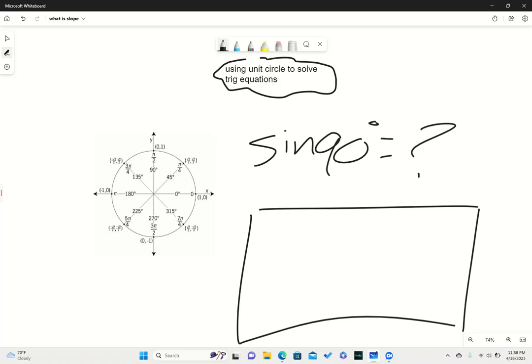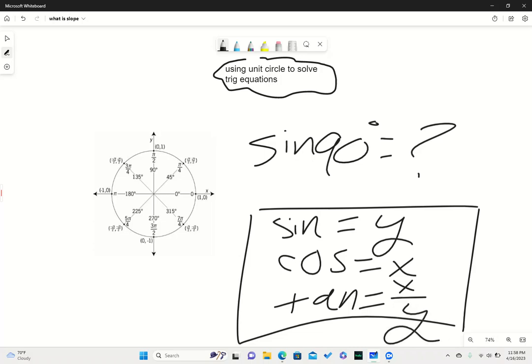So when looking at trying to find the sine of 90 degrees, sine is the y part of the x and y coordinates, cosine is the x part of the x and y coordinates, and tangent is x over y. So you always look at them like that when trying to solve these.